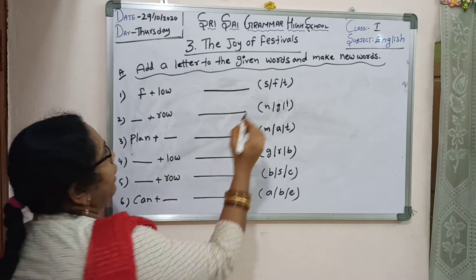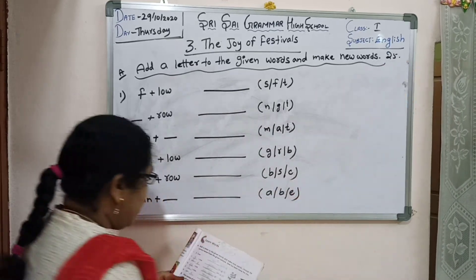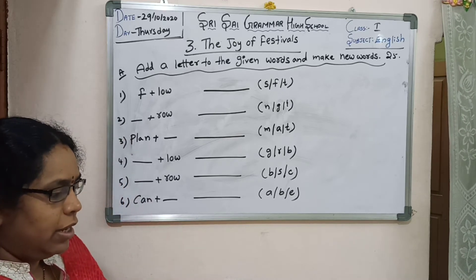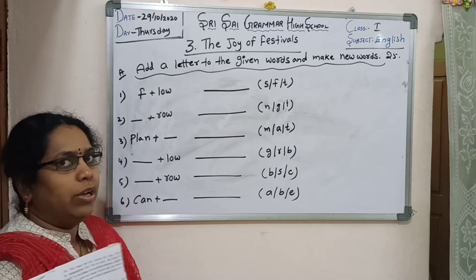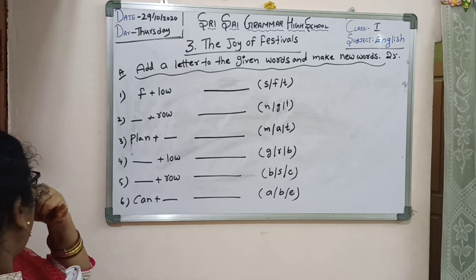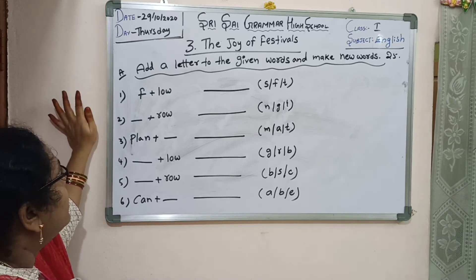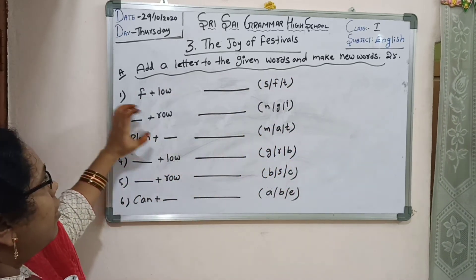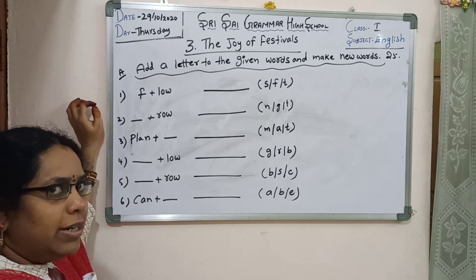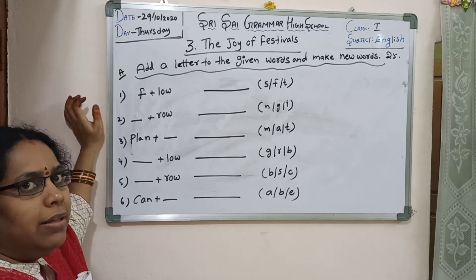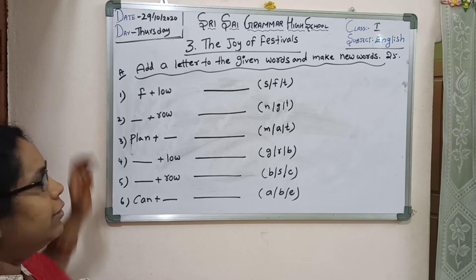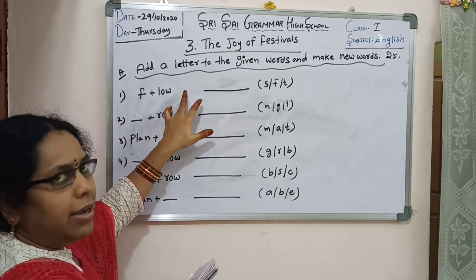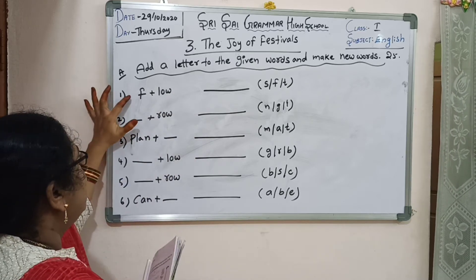Next, take out page number 25. Add a letter to the given words and make a new word. Choose the correct letter from the given options. In this page we have some activity — exercise. We add a letter to the beginning or ending of a word and it becomes a new word.